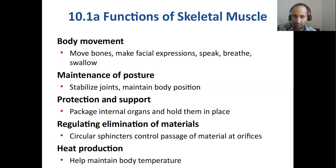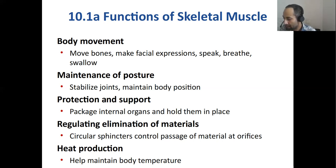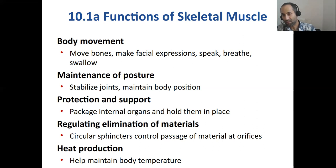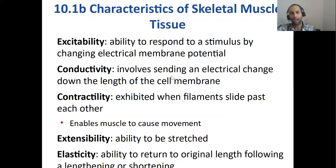Protection and support — you need strong core muscles to support and hold the body organs in place, going back to hernias. Elimination of materials: when you're defecating or urinating, you have to contract your abdominal muscles in something called the Valsalva maneuver, which helps with those body functions. And heat production or thermoregulation — that's a function many people don't associate with muscles. When you're cold, your muscles shiver, and the shivering brings up your body temperature. Your erector pili muscles in your hypodermis contract to give you goosebumps, when your hair stands on end, which traps heat as well.